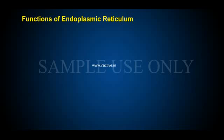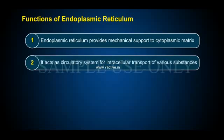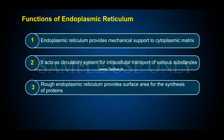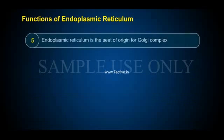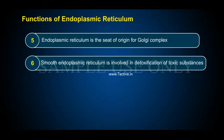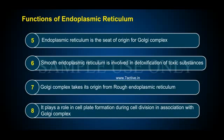Functions of Endoplasmic Reticulum: 1. Endoplasmic reticulum provides mechanical support to the cytoplasmic matrix. 2. It acts as a circulatory system for intercellular transport of various substances. 3. Rough endoplasmic reticulum provides surface area for the synthesis of proteins. 4. Smooth endoplasmic reticulum is associated with the synthesis of lipids. 5. Endoplasmic reticulum is the site of origin for Golgi complex. 6. Smooth endoplasmic reticulum is involved in detoxification of toxic substances. 7. It plays a role in cell plate formation during cell division in association with Golgi complex.